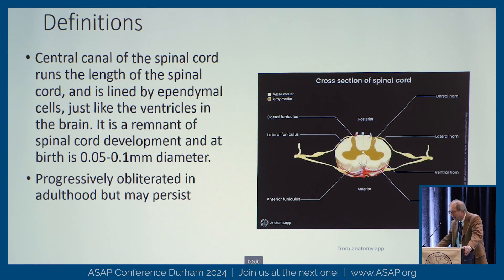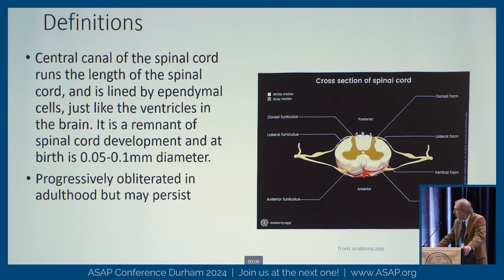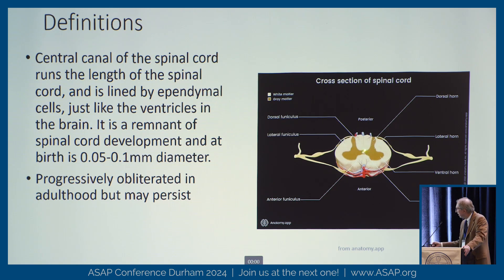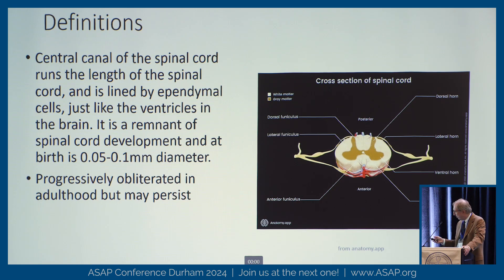Getting back to the central canal — I used a very similar diagram to Dr. Crawford. The central canal of the spinal cord runs the length of the spinal cord initially. It's lined by ependymal cells, just like the fluid chambers of the brain. It's a remnant of spinal cord development, gets smaller at birth, and then gets progressively obliterated in adulthood. In this talk, we'll discuss what happens when it sticks around, its significance, and how it compares or differs with syrinx cavities.